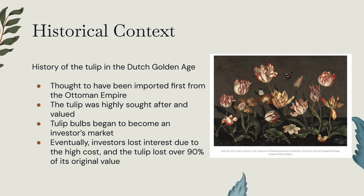It is theorized that the Ottoman Empire brought tulips first to the Netherlands before anyone else, but that is not confirmed. As this tulip stock market began to grow in this time of economic prosperity, in February 1637, the stock market created around tulips began to crash as investors no longer saw the value matching up with the product. They began to sell their shares and ownership, and by the end of the crash, tulip bulbs had lost 90% of their earlier value.